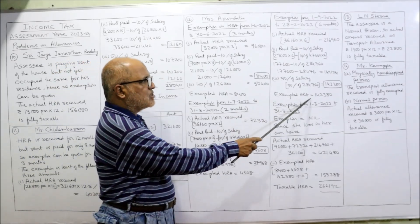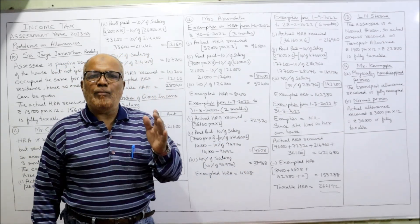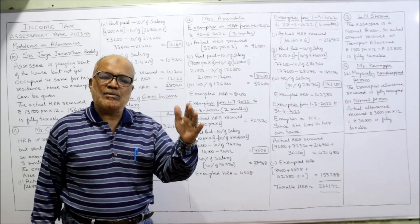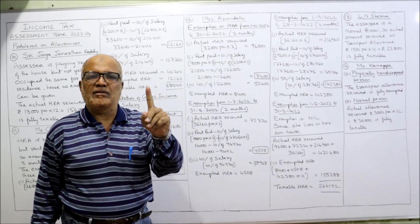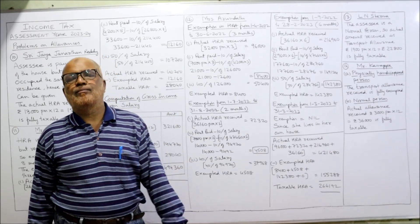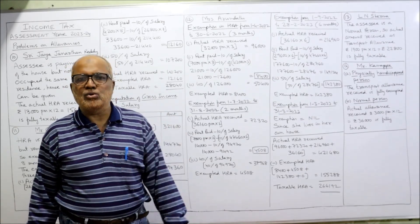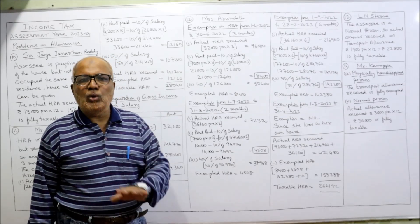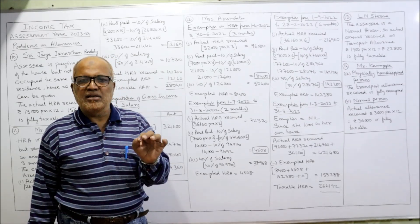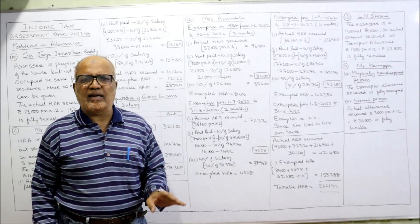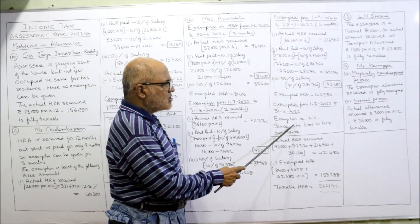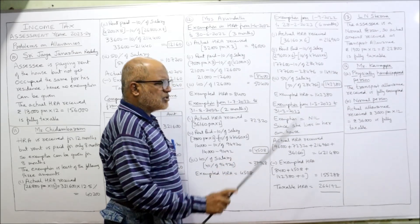Period 4: 1st March 2023 to 31st March 2023 — one month. She has purchased a flat and is now living in her own house, not paying any rent. So no HRA exemption. Actual HRA received for this one month is fully taxable. Exemption: nil, since she lives in her own house.